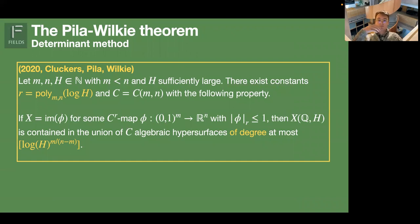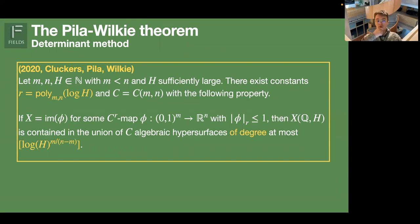I've put here a version from a recent paper by Cluckers-Pila-Wilkie. It is the same statement, but now you decide in advance to pick d as a polynomial in log H. In that case, r is polynomial in d — so polynomial in log H — but the number of algebraic hypersurfaces now remains constant. This is exactly what you want for a proof of Wilkie's conjecture, where you have this polynomial-in-log-H bound. But note that r is now a polynomial in log H — that is a very important thing to keep in mind.